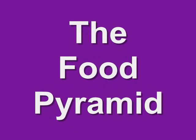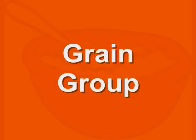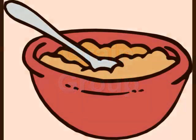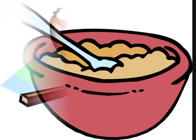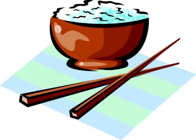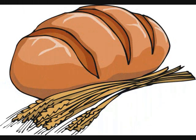The food pyramid. The grain group consists of oatmeal, rice, and bread along with many other foods.